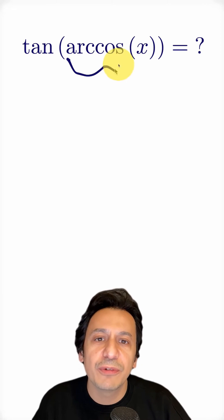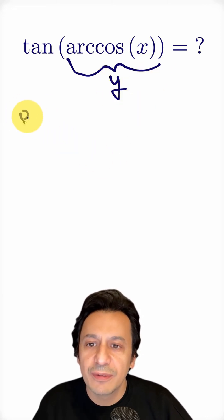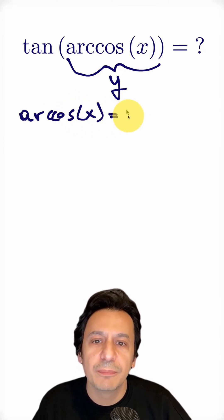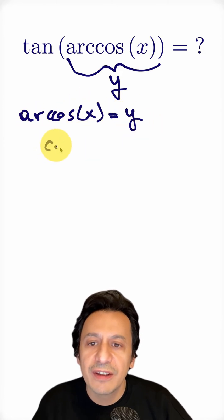First, I'm going to assign a value y to this arccos(x) here. Let's write that down. Let's say arccos(x) equals y. By definition, cosine y should equal x.